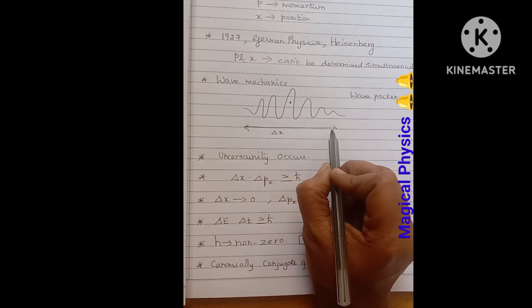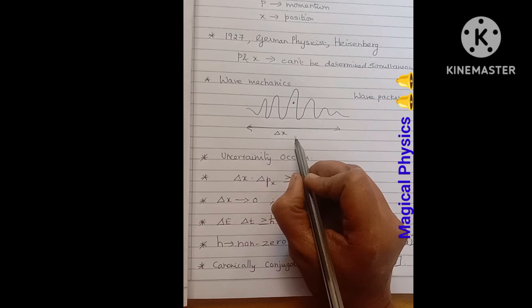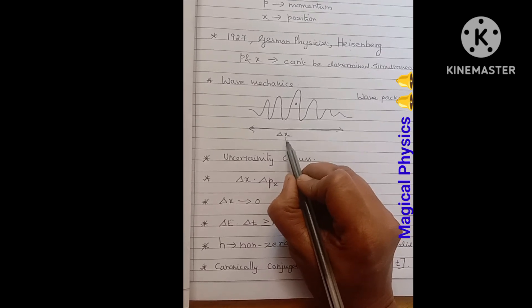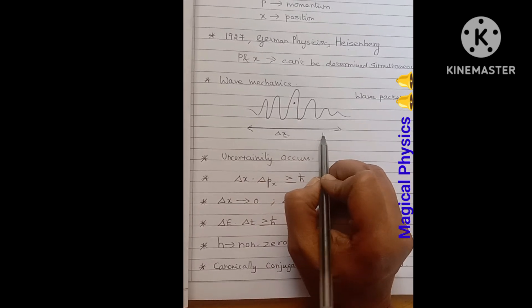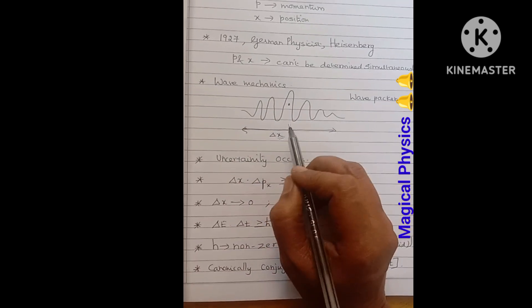This is the region which it gets traveled. Since it is moving in x direction, I have denoted this x term. Within this region, the particle can be anywhere, it can exist.